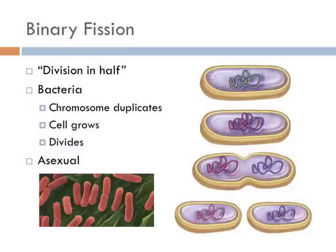Binary fission literally translates to splitting in half. Binary means two, and fission means splitting. And that's how prokaryotes reproduce. Compared to eukaryotes, this process is really pretty straightforward.